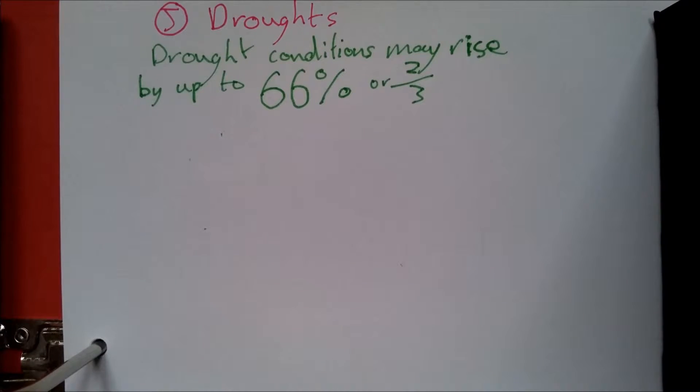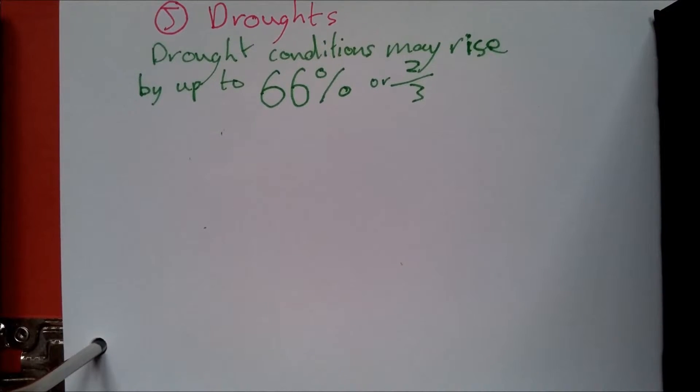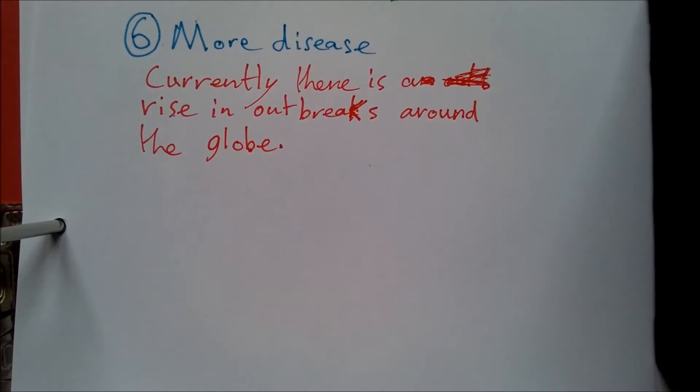Number 5: Droughts. Drought conditions may rise by up to 66%, or two-thirds.